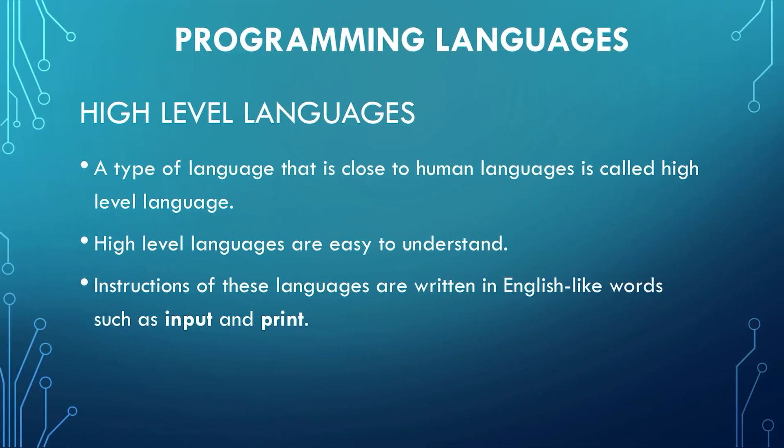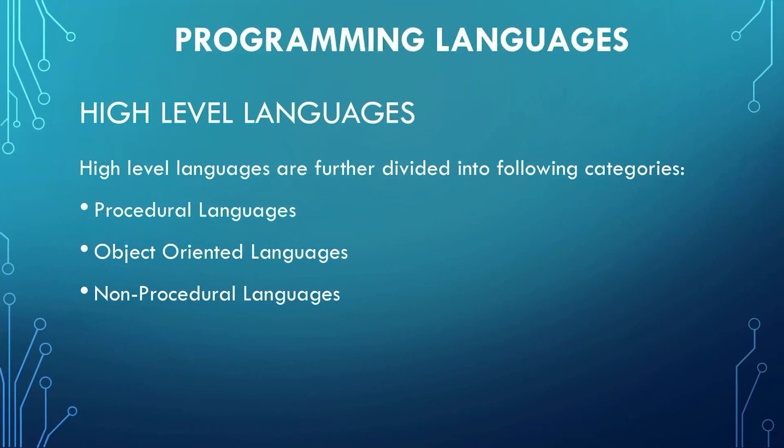Next, we will move towards high-level languages. A type of language that is close to human language is called a high-level language. High-level languages are easy to understand as they are close to human beings. The instructions of these languages are written in English-like words. For example, we can say 'input' and 'print'. If we want to input something, we can exactly use the word 'input' instead of using some binary code, and we can use the word 'print' instead of some binary code. High-level languages are further divided into procedural languages, object-oriented languages, and non-procedural languages.